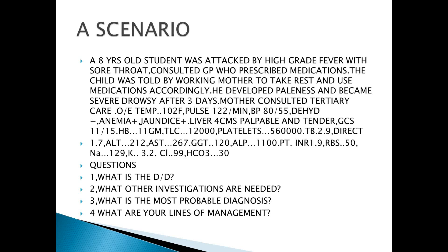Hemoglobin is 11 grams, which is lower. TLC is 12,000, which is higher. Platelet is 560,000, which is higher. Total bilirubin was 2.9, definitely higher. Direct is 1.7. If you subtract, the indirect is 1.2. It is a mixed type of picture, with the predominant being direct type of bilirubin.